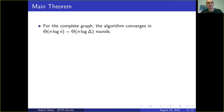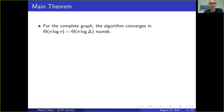Let us first look at a simple case. For the complete graph, the algorithm converges in order n log n. This can be seen as essentially the coupon collector process: at each step we redraw one of the colors and we want to achieve all of them, which is well known to take order n log n time.